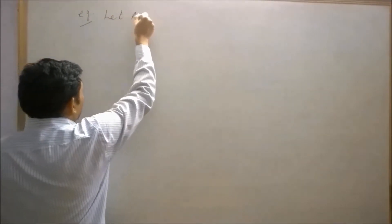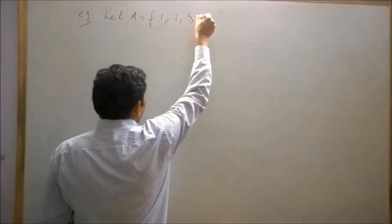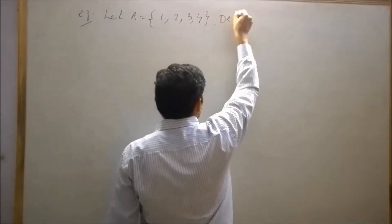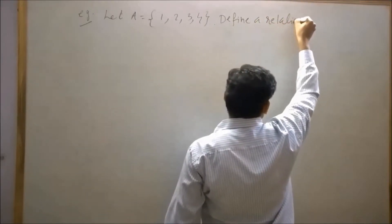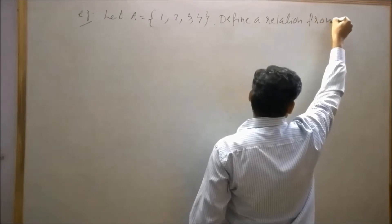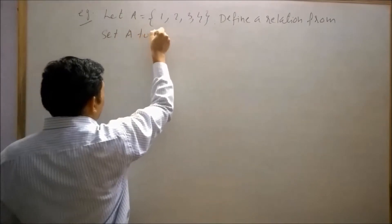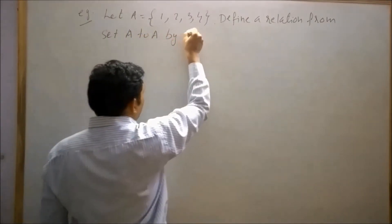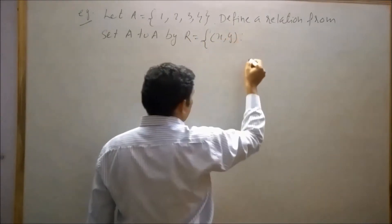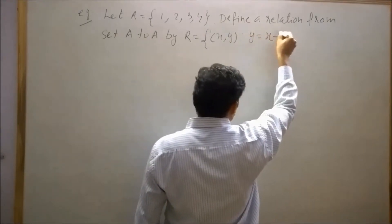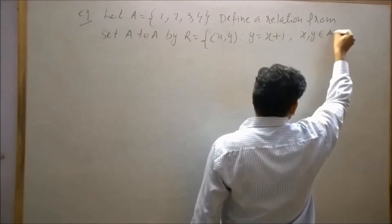Let A is a set which contains 1, 2, 3 and 4. Define a relation from set A to A by R = {(x,y): y = x+1, x,y ∈ A}.